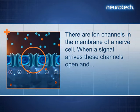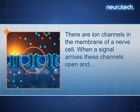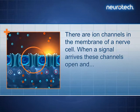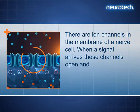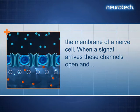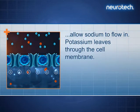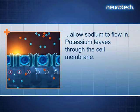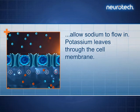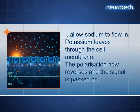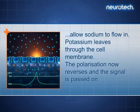There are ion channels in the membrane of a nerve cell. When a signal arrives, these channels open and allow sodium to flow in. Potassium leaves through the cell membrane. The polarisation now reverses and the signal is passed on.